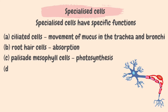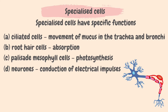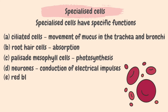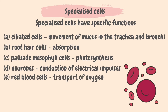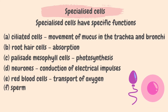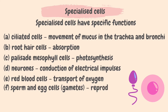Neurons are nerve cells that help to carry electrical impulses from one place to another. Red blood cells contain haemoglobin which helps transport oxygen throughout the organism. Sperm and egg cells, or gametes, are responsible for reproduction — the nuclei of these two cells fuse and lead to the development of an embryo.